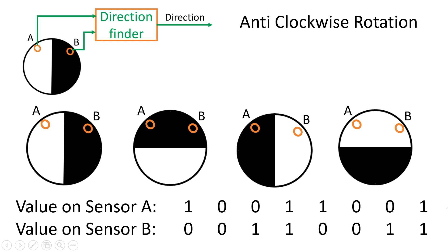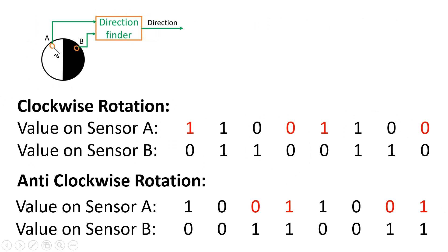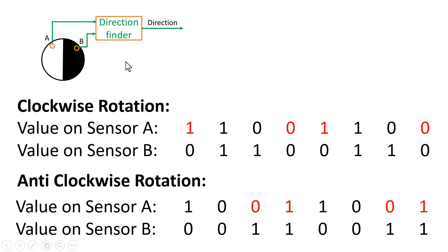Friends, if you pay attention to the outputs of sensor A and B when the disk rotates clockwise as well as anticlockwise, you will notice that the output of sensor A is a periodic signal — 1 1 0 0 1 1 0 0 — clearly a periodic signal with 50% duty cycle. Similarly, the output of sensor B is also a periodic signal with 50% duty cycle. So one of the signals can be used as a clock signal to this direction finder, and the behavior is the same in the anticlockwise direction as well.